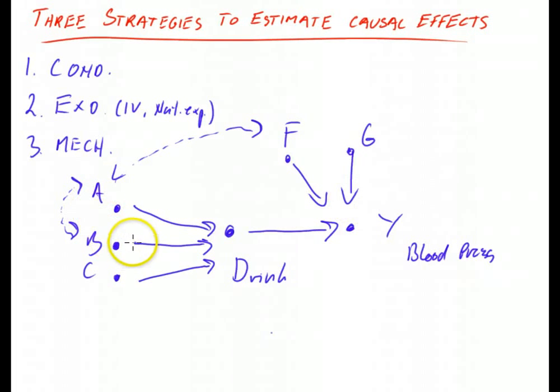You see, for example, A here. A will affect drinking but it will also affect blood pressure directly because A will affect F which will affect blood pressure. So we have to take away the effect that A has, and that's what we do when we do conditioning in normal regression analysis, for example. So all you need then is to close down all the back doors, meaning all the ways you can go from D and get back to Y.